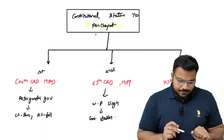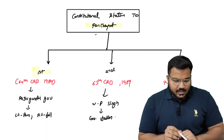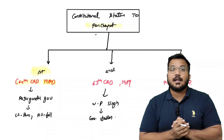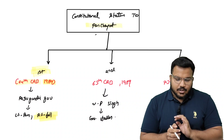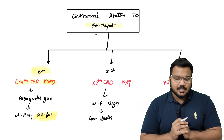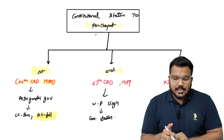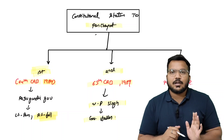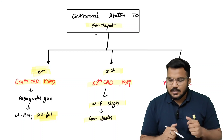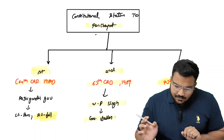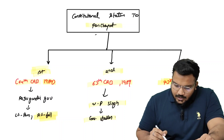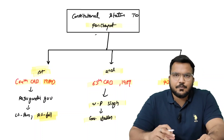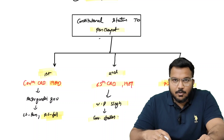Constitutional status देने की कोशिश — 64th Constitutional Amendment Bill Lok Sabha में pass हुआ लेकिन Rajya Sabha में majority न होने से fall हो गया। फिर 65th Constitutional Amendment Bill VP Singh लाए, लेकिन government गिर गई — economic crisis का time था। Actual में जो pass हुआ वो था 73rd Constitutional Amendment Act of 1992 — जहाँ Panchayati Raj institutions को power दिया गया। इसके बाद 74th Constitutional Amendment Act आया — urban areas के लिए।